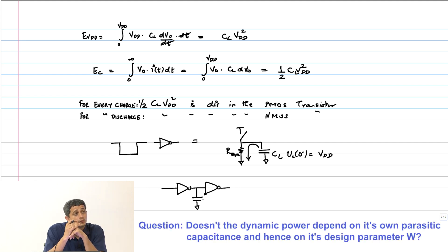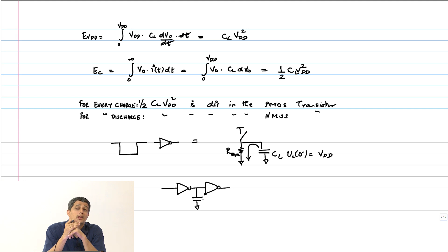You are saying that its own parasitic capacitances. Question is do we isolate that somewhere. You are right in the sense that yeah it does depend on its design parameter W_P and W_N through the capacitance, but not to the resistance yeah I stand corrected. So, with that we will stop today's class. In the next class we will continue with the discussion on power we will cover the short circuit power and leakage power and wind up this module in the next class.